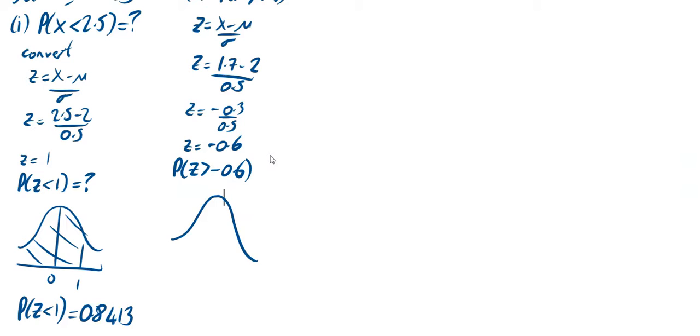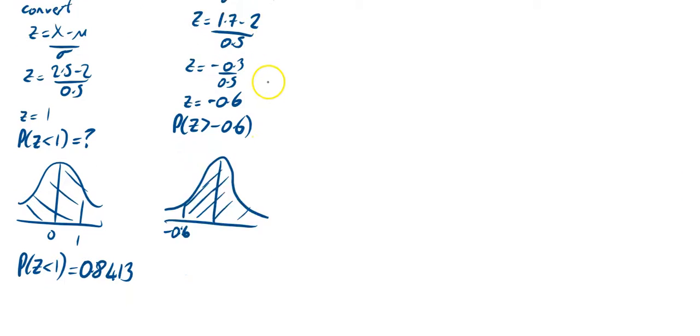Let's have a look at our diagrams this time. Do your bell shape diagram, mark on your 0. Minus 0.6 would be here. We want the shaded bit to the right of it. You can't do that directly from your tables.